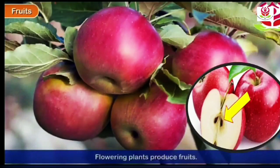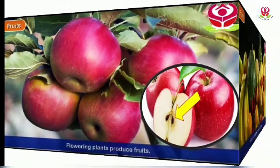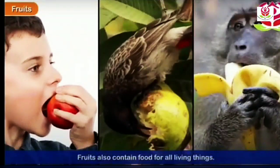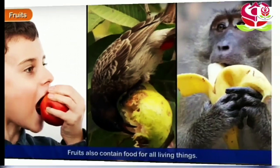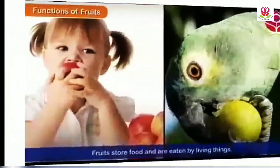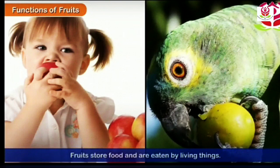Next are fruits. Flowering plants produce fruits. Fruits contain food for all living things — human beings, birds, animals, and so on. The fruit is the part of the plant that contains seeds. The functions of fruits: fruits produce and protect seeds, and fruits store food and are eaten by living things.